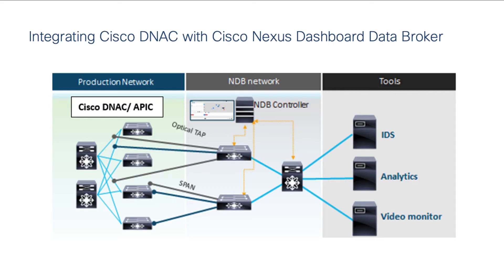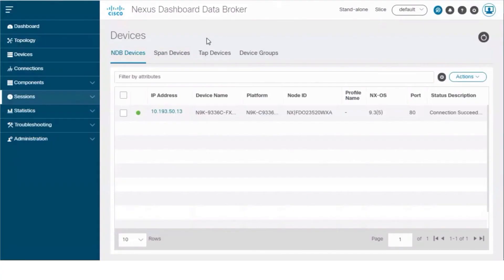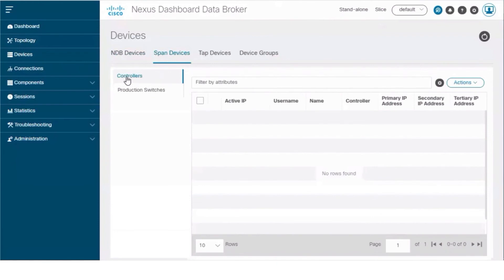Cisco Digital Network Architecture Center, DNAC, is a powerful network controller and management dashboard that lets you take charge of your network. The DNAC controller can be integrated with the Cisco Nexus Dashboard Data Broker. Span Session configurations on the Catalyst switches are managed from the Nexus Dashboard Data Broker GUI. For DNAC integration with Cisco Nexus Dashboard Data Broker, navigate to Devices, Span Devices, and select Controllers.